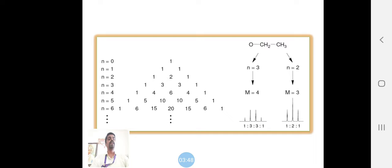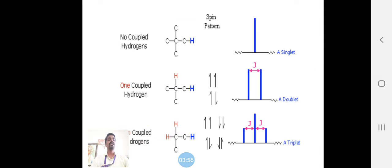M equals 3 means 1:2:1. These are the signals - singlet, doublet, triplet, and quartet. So many multiple signals are there. J, that is the coupling constant, also we measure through these techniques.